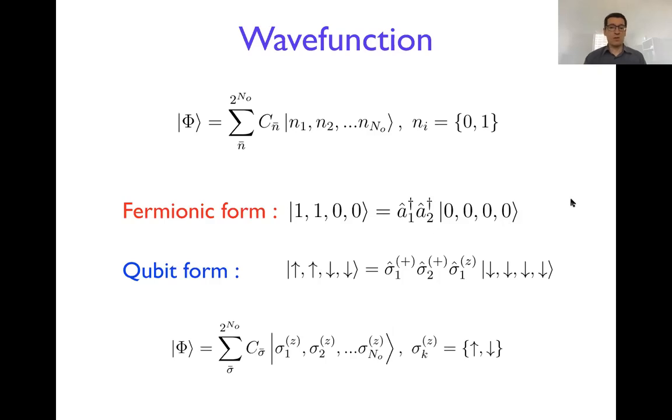Analogously in the qubit form, we can essentially create an analog of that Hartree-Fock determinant using the qubits. Now the ones correspond to the up qubits, the zeros correspond to down qubits, and then you can create this out of the vacuum product of qubits by acting with these sigma operators.